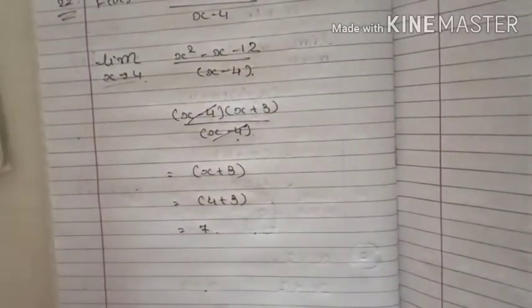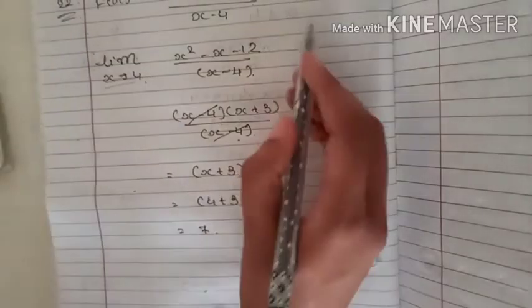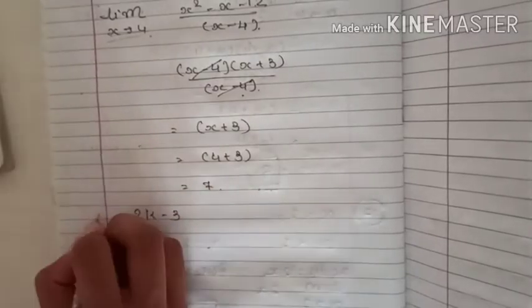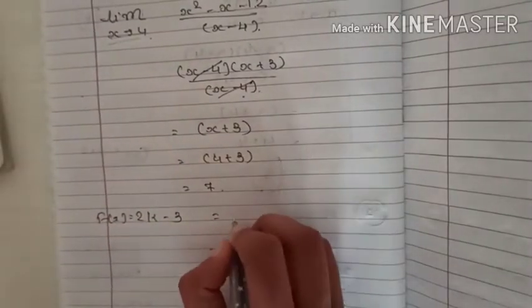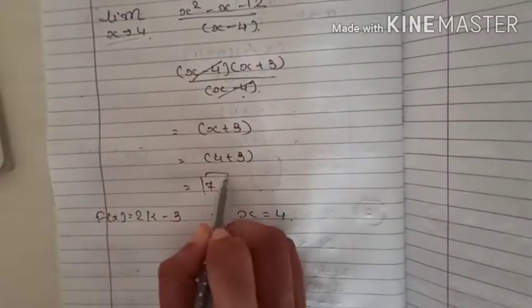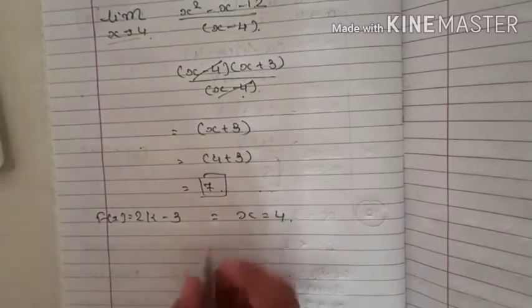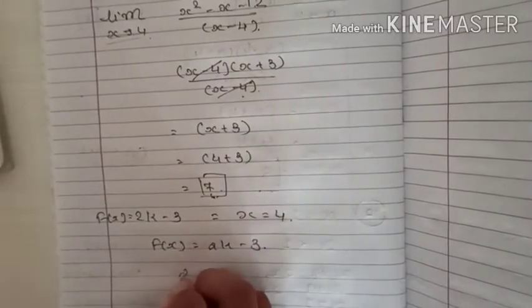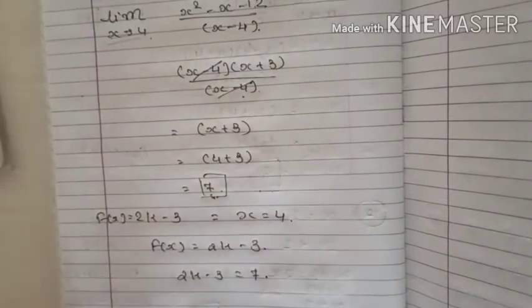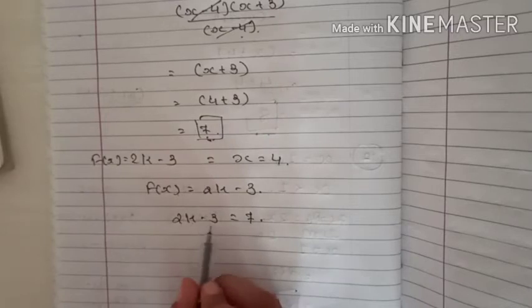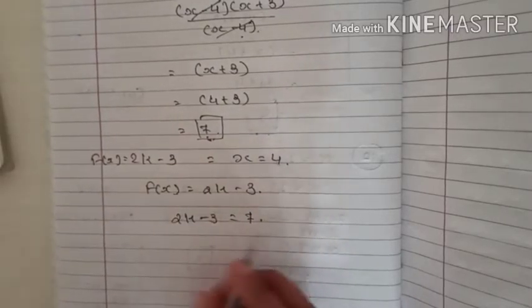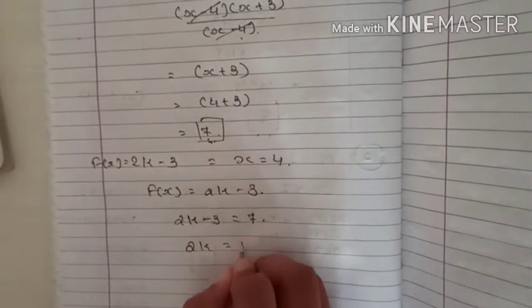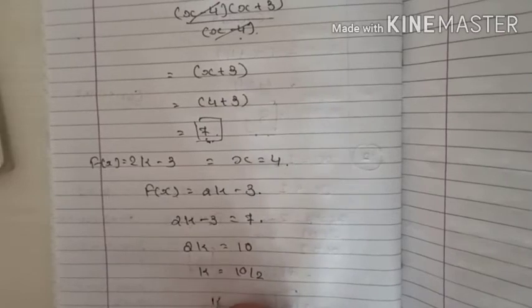Since the function is continuous, both answers must be equal. Therefore 2k − 3 = 7. Solving: 2k = 7 + 3 = 10, so k = 10/2 = 5.